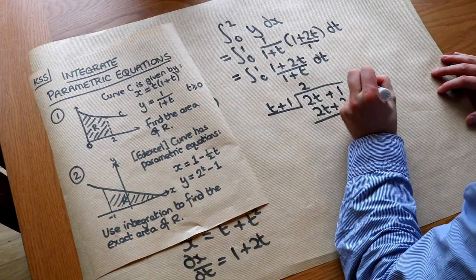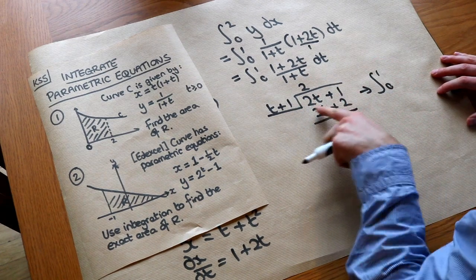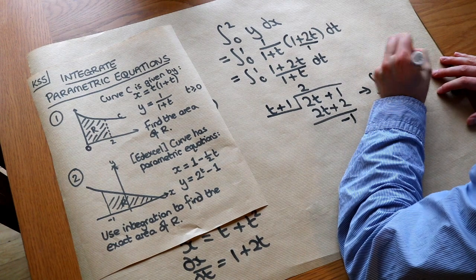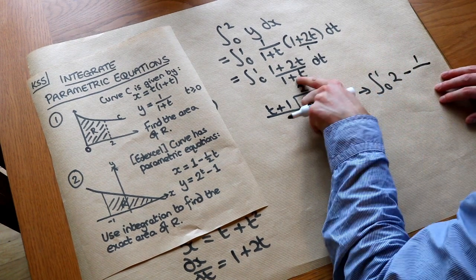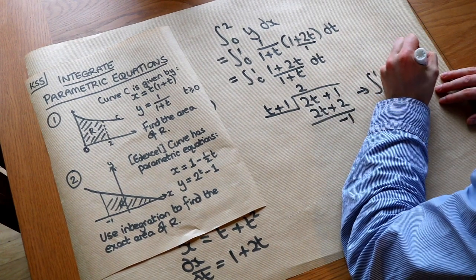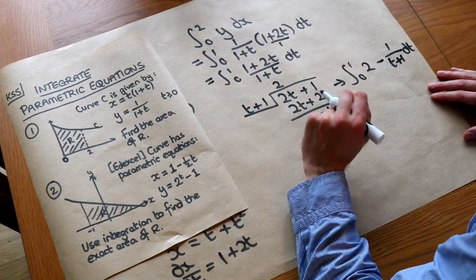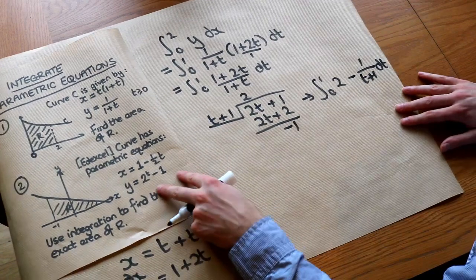So that means we're now instead integrating the quotient, which is 2, and then minus 1, that remainder, over the thing we're originally dividing by, and we get that. And if that's unfamiliar to you, this idea of algebraic long division, I have separate videos on that. So let's do this integration now.